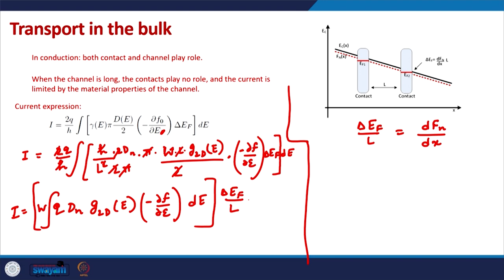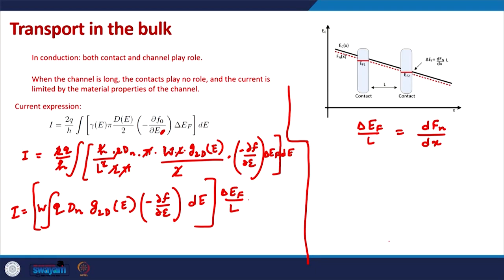In bulk conductors, we can define the Fermi level across the entire channel. In steady state, this is defined by the quasi Fermi levels. So δE_F / L can be written as the gradient of the quasi Fermi levels. At this moment we are only considering transport due to electrons in the conduction band.